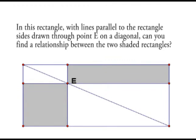Shaded rectangles, with lines parallel to the rectangle sides drawn through point E on a diagonal, can you find a relationship between the two shaded rectangles?